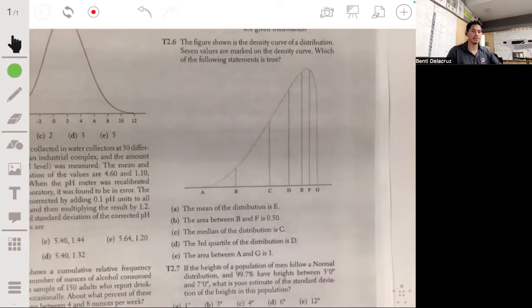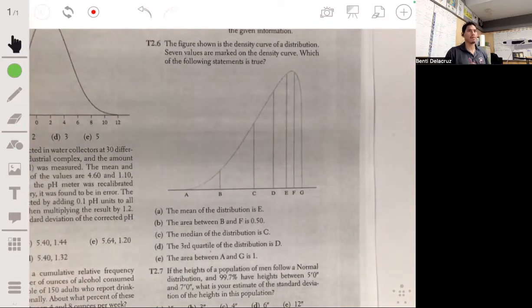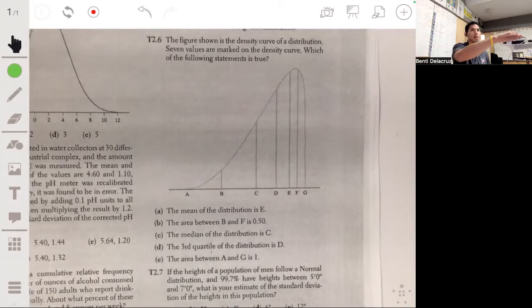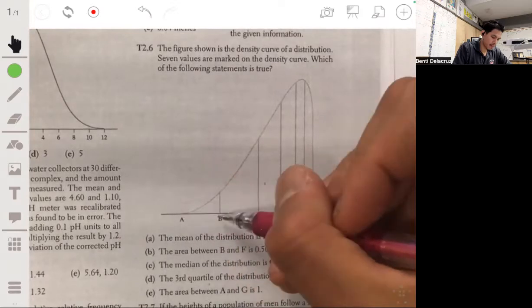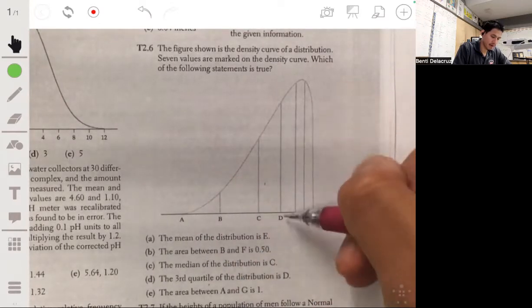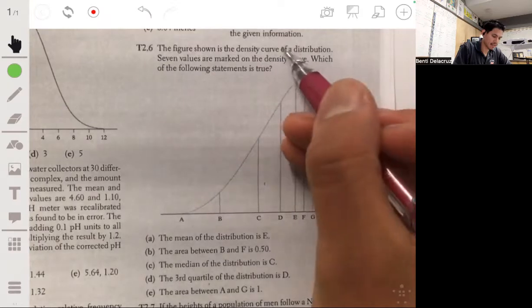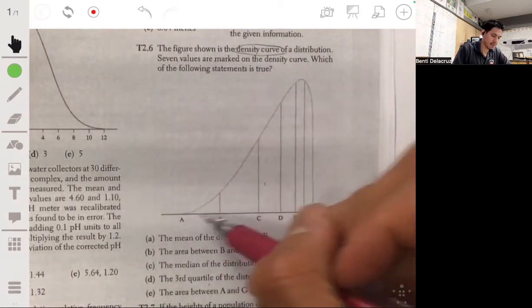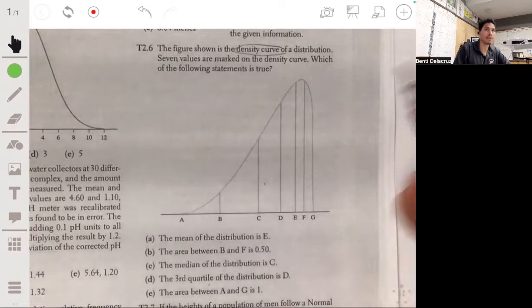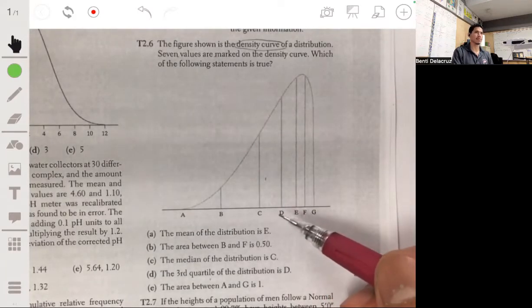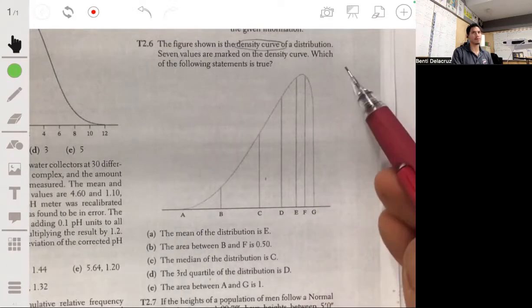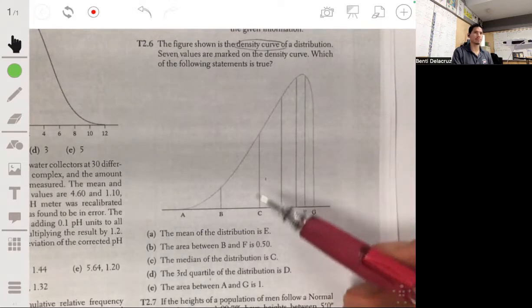Alright, so 2.6, we have this conceptual drawing. Let's zoom in on it. We have these letters corresponding to markings on what we have. It says a density curve with seven values A, B, C, D, E, F, and G, and we want to see which of these statements are true. So let's go through them. Pretty much this one, you just have to verify each one by one until you have one that's true.